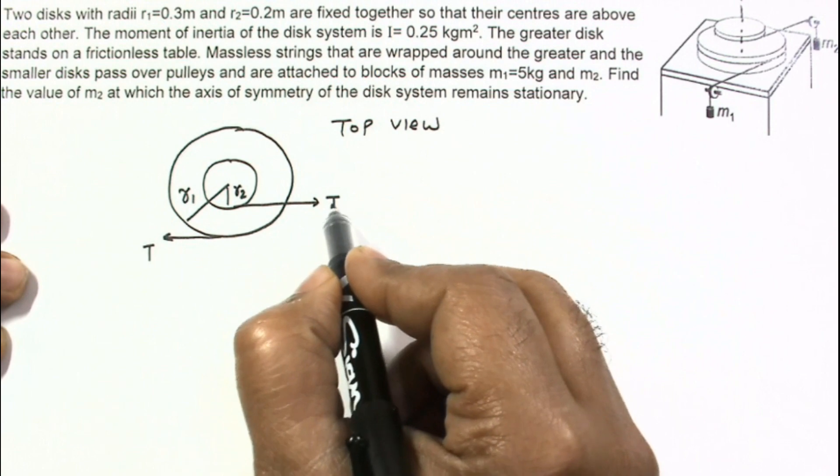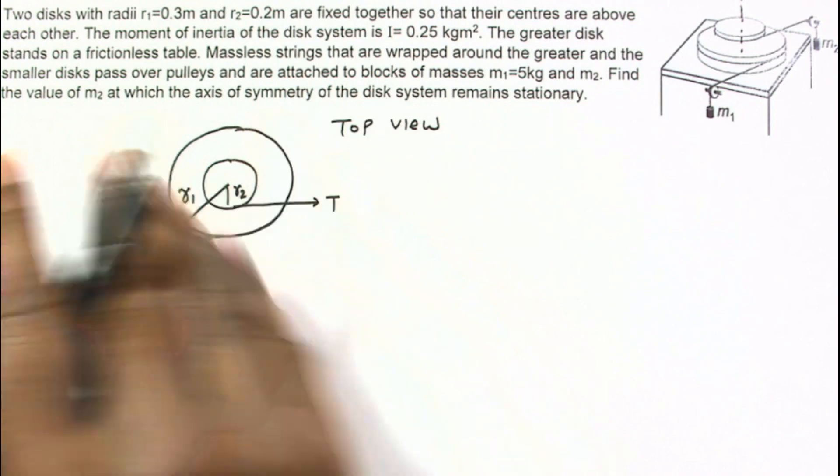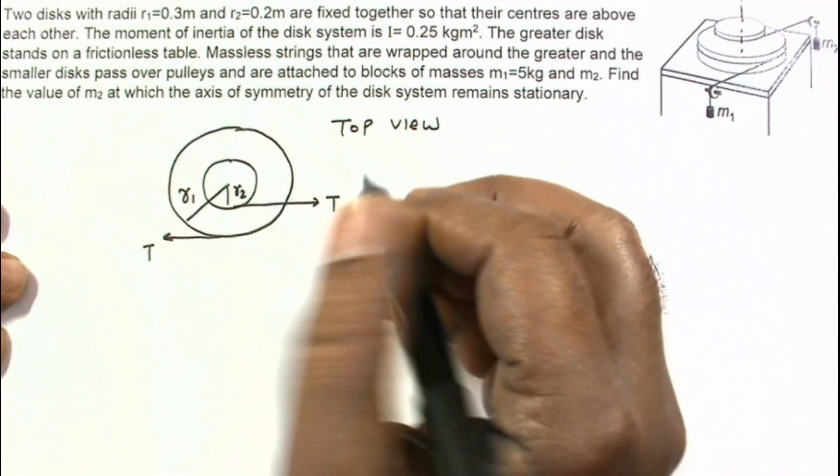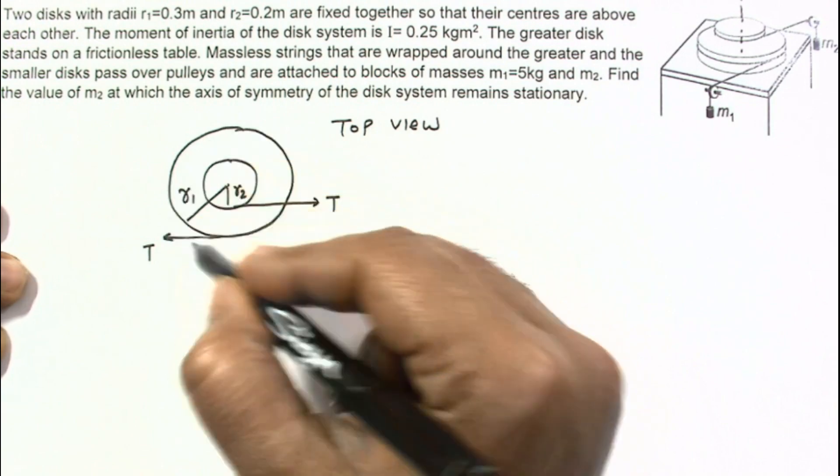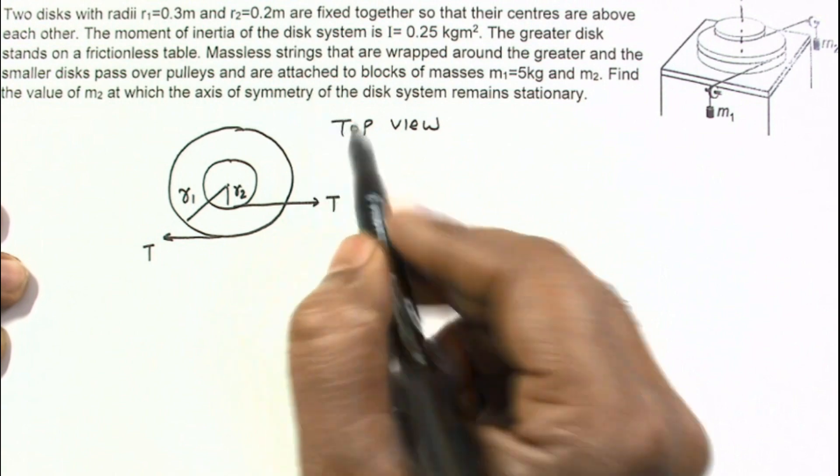I am taking these two tensions as equal. Otherwise, if net force is not zero in this horizontal plane, then this axis will start moving. So the tensions should be equal, then only the axis of symmetry will remain stationary.